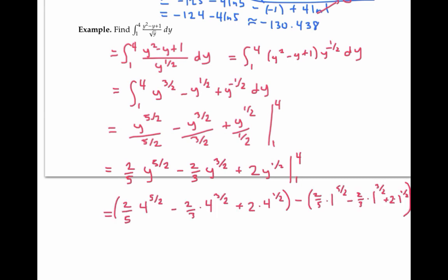Now 4^(5/2) is the same thing as (4^(1/2))^5. So that's 2^5 or 32. Similarly, 4^(3/2) is (4^(1/2))³, so that's 2³ or 8, and 4^(1/2) is just 2.